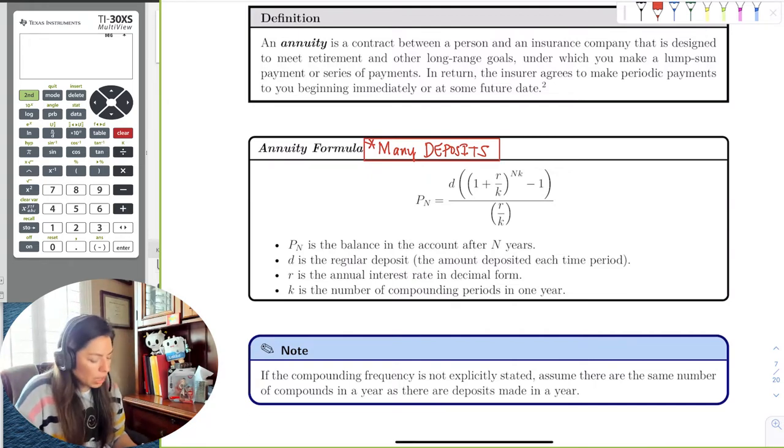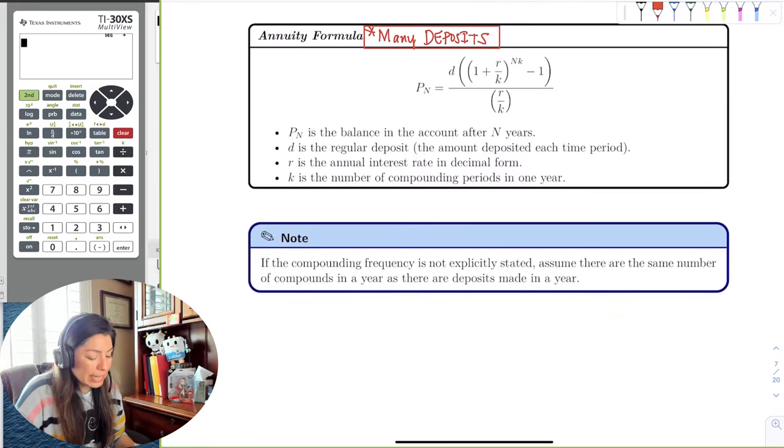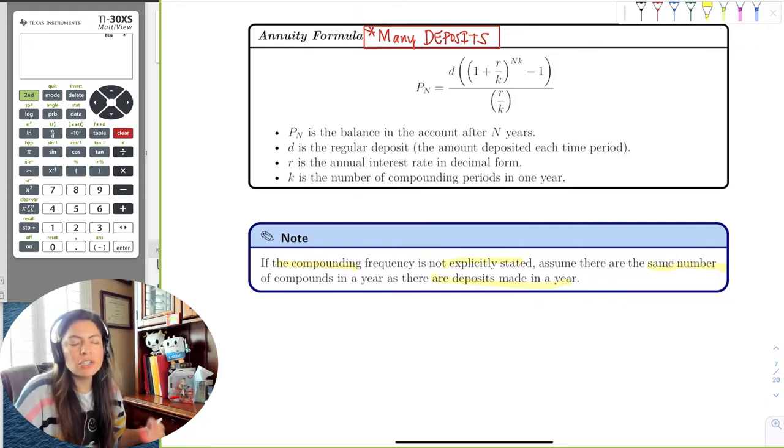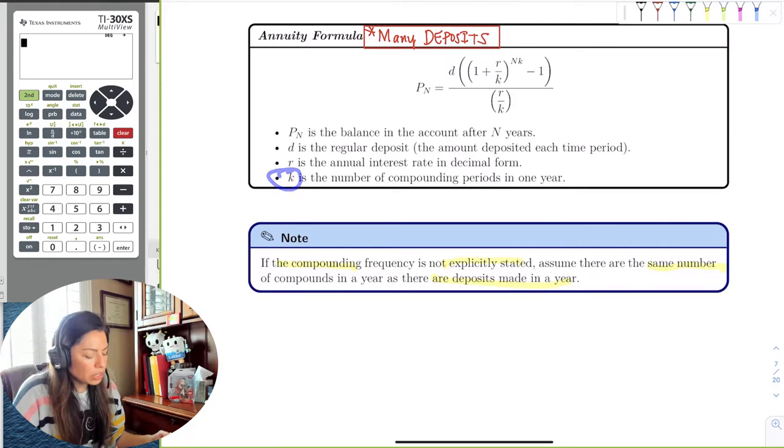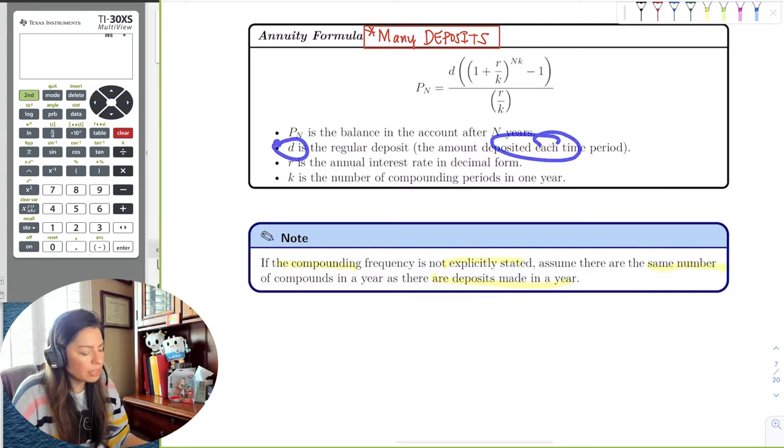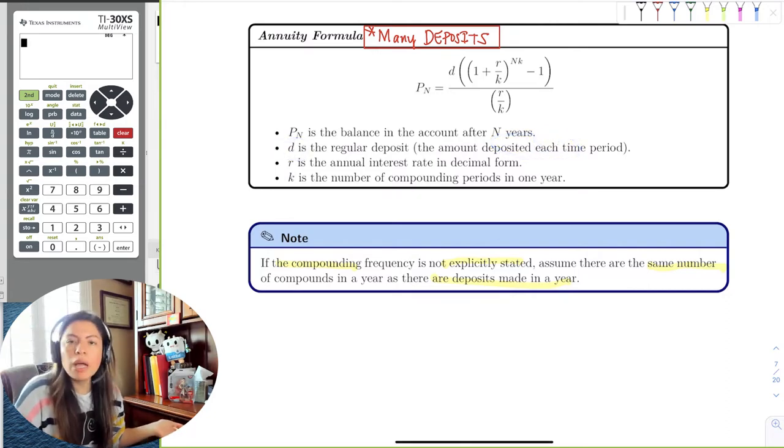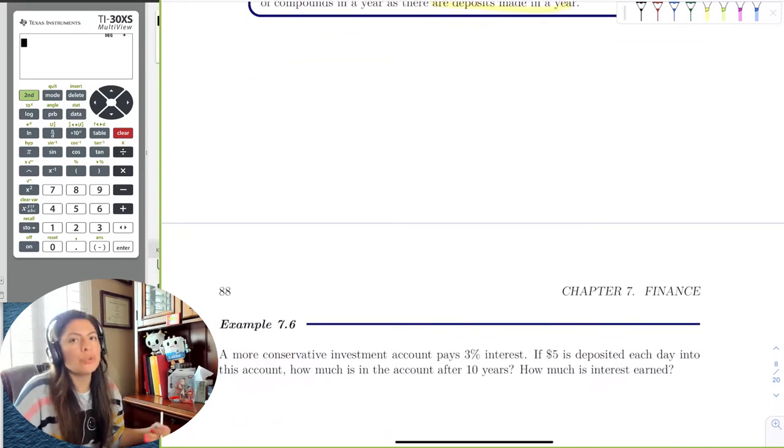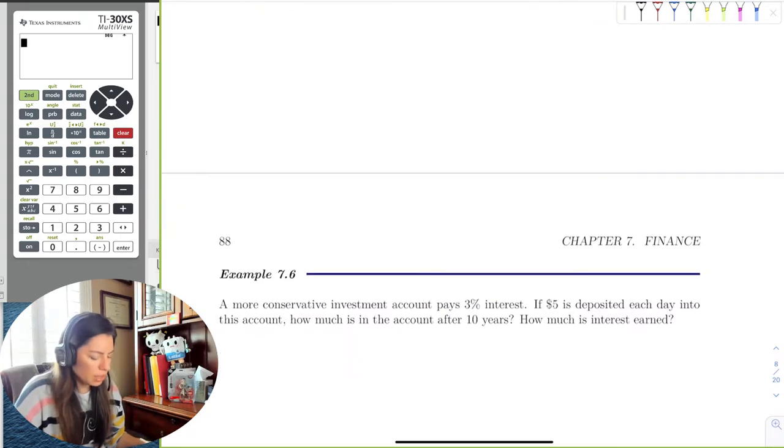So if the compounding is not explicitly stated, we just assume it's the same number as the number of deposits per year. If K isn't given, we assume it takes the same time units as R and D. So if you have deposits every month, then K will automatically be 12. If you have deposits 24 times a year, your K would be 24.